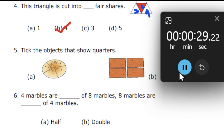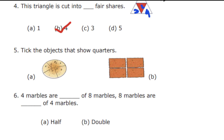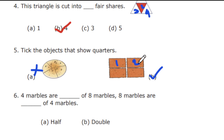30 seconds over. The correct answer is option B. A quarter should always have equal size. When you look at option A, it is cut into different shapes and different sizes — so A is not correct. In the rectangular option B, there are four quarters of equal sizes: one, two, three, four. So option B is the correct answer.